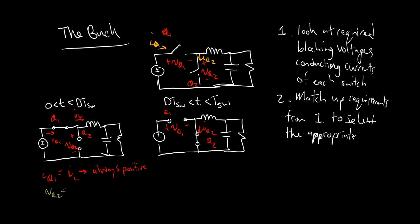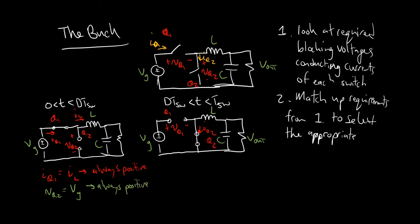Let's look at VQ2 in green. VQ2 has to block VG — this is the input VG. This is Vout. So VQ2 has to block the input voltage VG. We're going to assume we're trying to convert a positive voltage, so the input voltage is always positive.